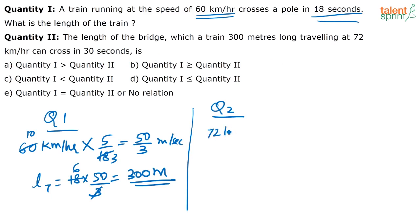So again, 72 kilometers per hour is how many meters per second? 72 into 5 by 18. Or that equals 20. This is 4. 20 meters per second.